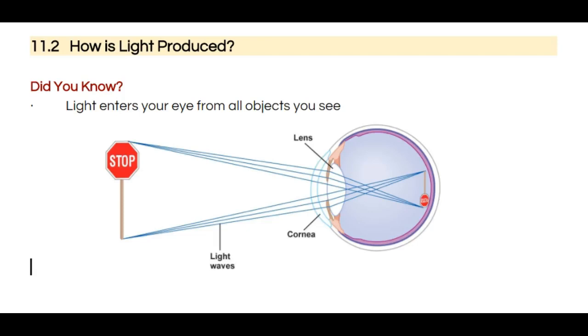So today's lesson is section 11.2 from your textbook, How Light is Produced. We're going to talk a little bit about how it is that we're able to see objects that surround us.